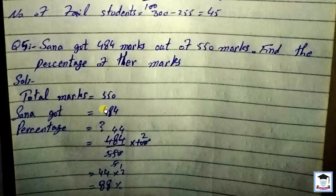Percentage: marks obtained over total marks, multiply by 100. So 484 over 550 times 100. After dividing by 11, we get 44 times 2, which equals 88 percent.